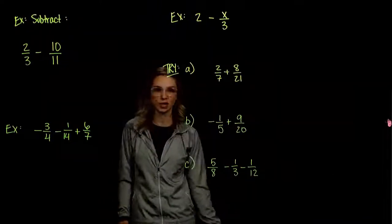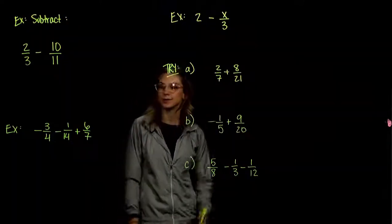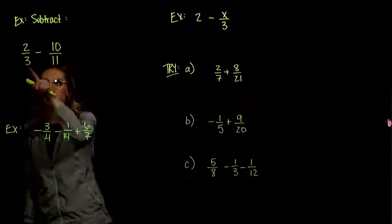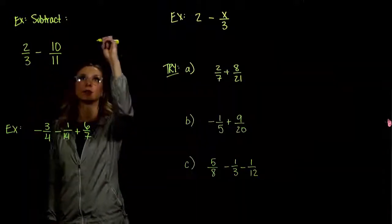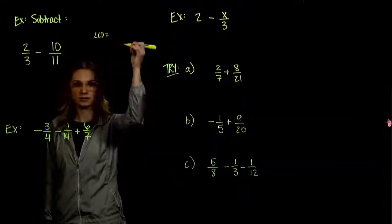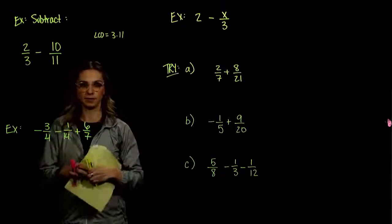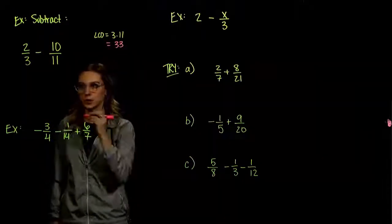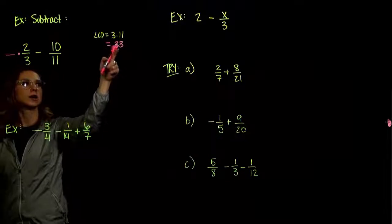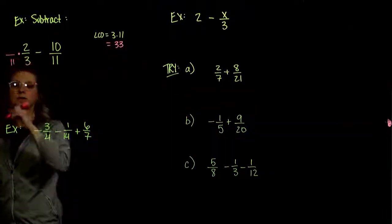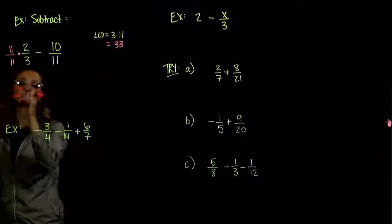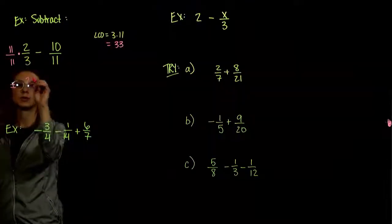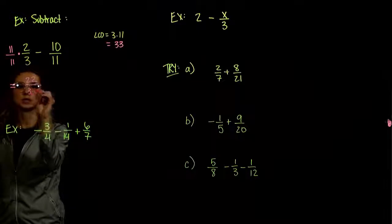It's pretty much the same story with subtraction. In our first subtraction example, the denominators are 3 and 11. We need common denominators. 3 is prime and 11 is prime, so our LCD has to take into account a factor of 3 and a factor of 11. Our least common denominator between these two is 33, so we have to alter both of them. To turn 3 into 33, we multiply by 11. Whatever we do to the bottom, we have to do to the top. Our equivalent fraction: 11 times 2 is 22 over 11 times 3, which is 33.